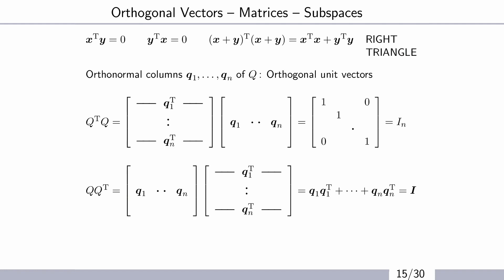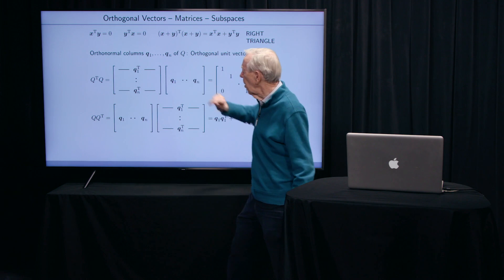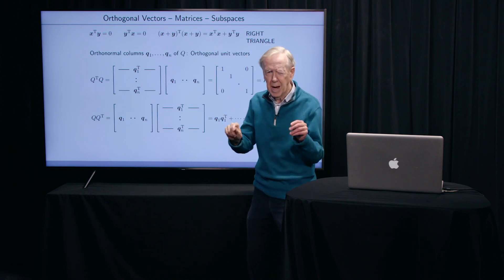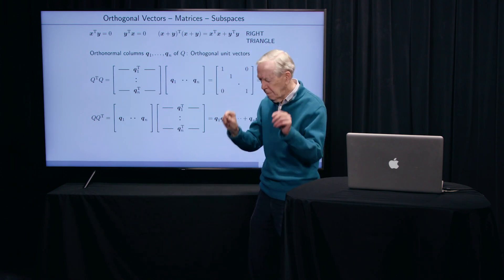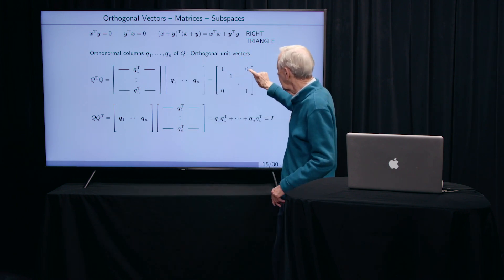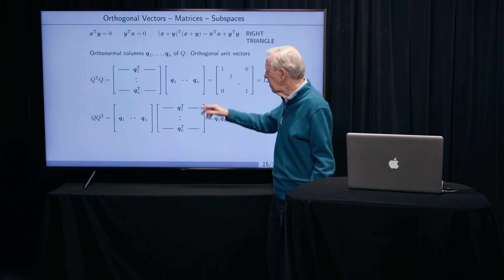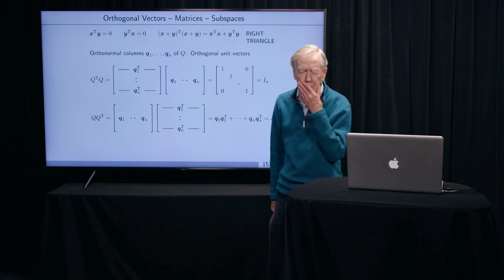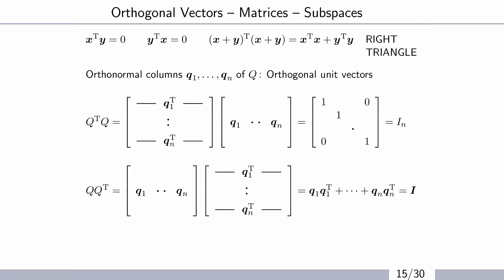The test for Q1 to be perpendicular to Qn is that row times that column. When I say times, I mean dot product - multiply every pair. Q1 transpose Qn gives that 0 up there. So the columns are perpendicular, and those matrices are the best to compute with. And again, they're called Q.